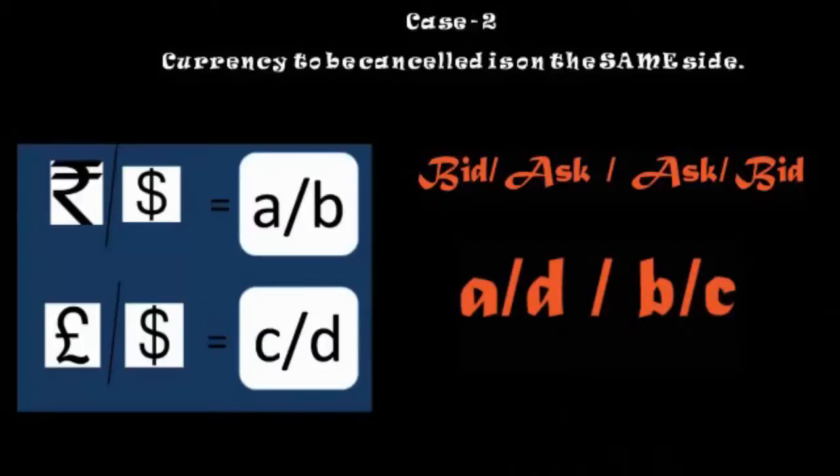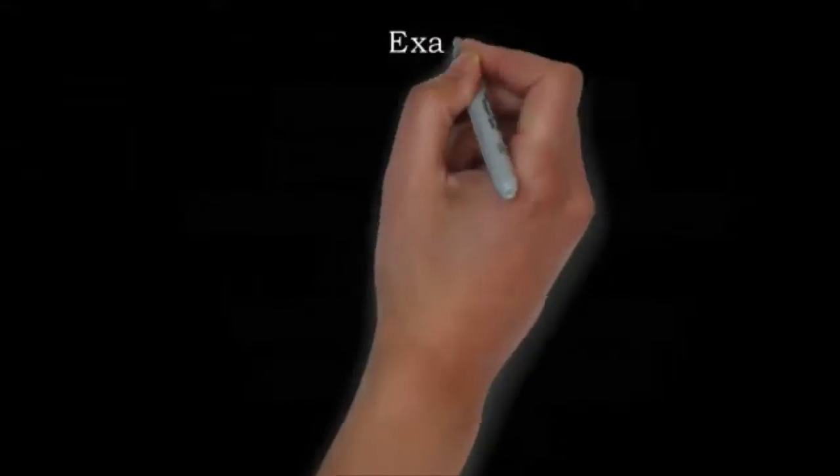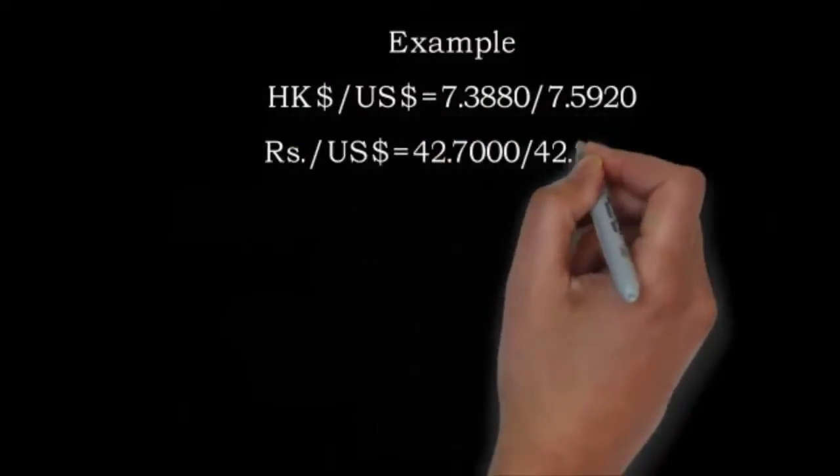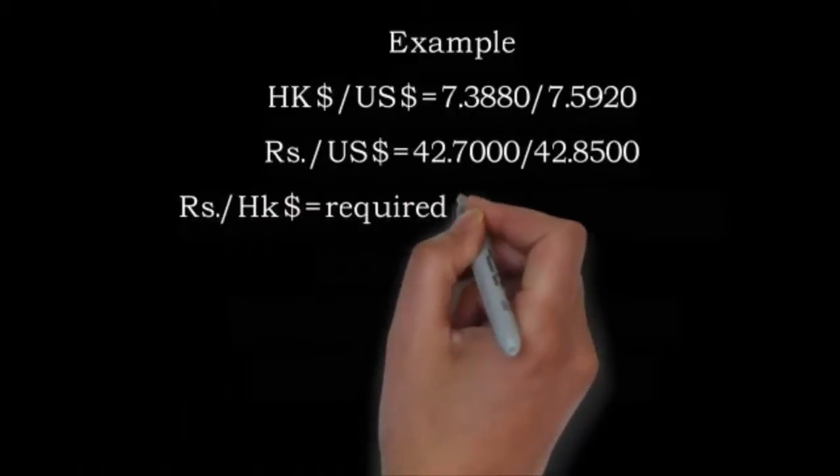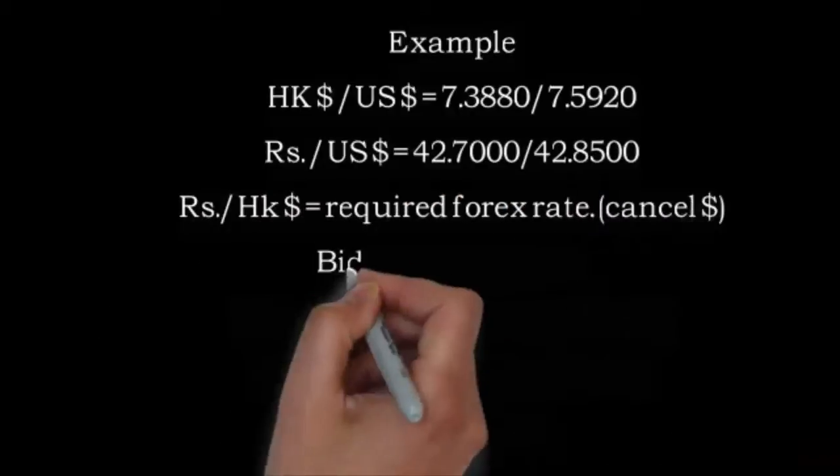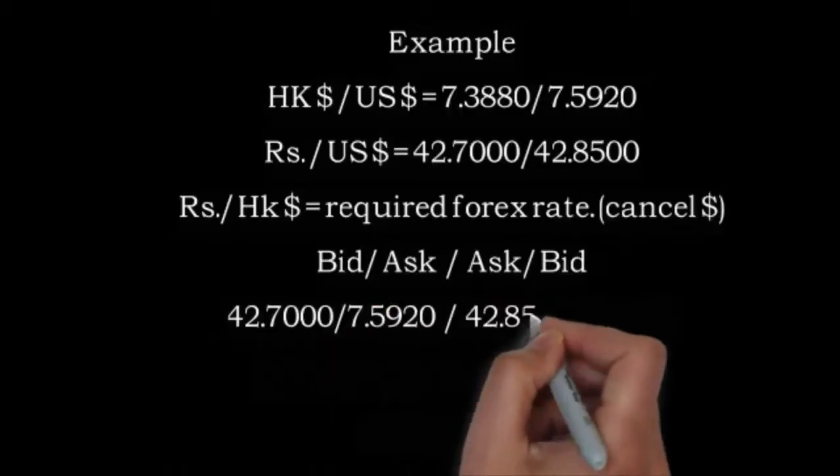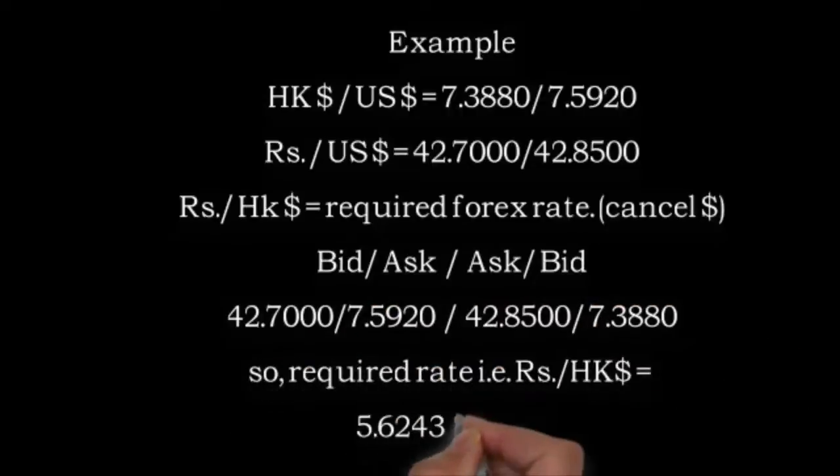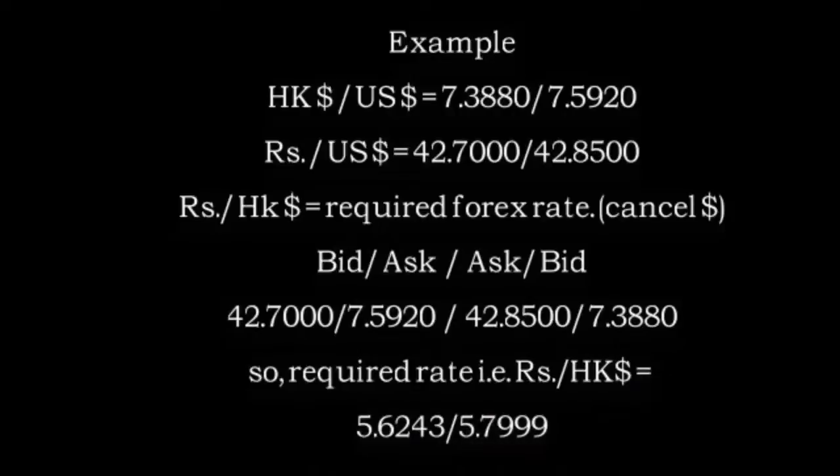Now let's take an example of this Case 2 equation, that is when it is on the same side. So 2 currencies are given. Now I want a rate in terms of Rupee per Hong Kong dollar. So the equation is bid by ask by ask by bid. So the required rate will be 5.6243 by 5.799.